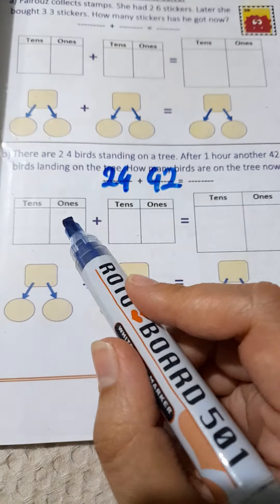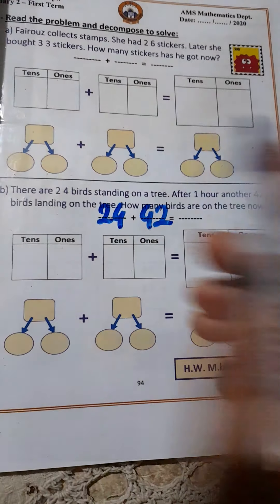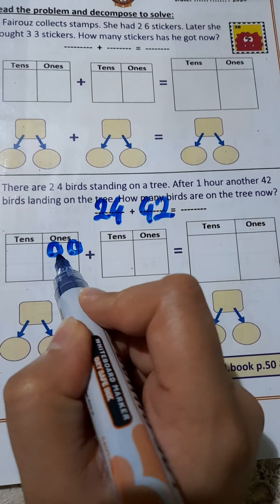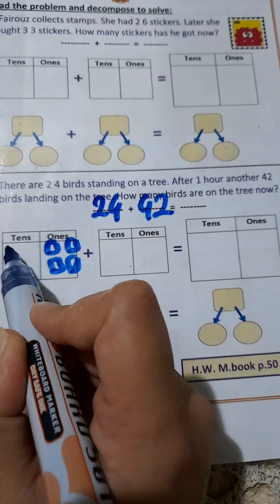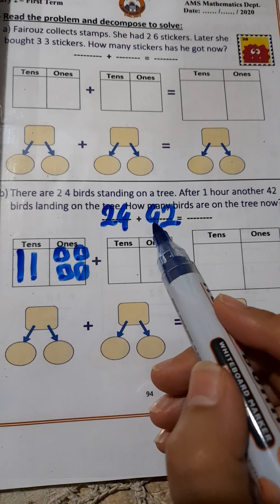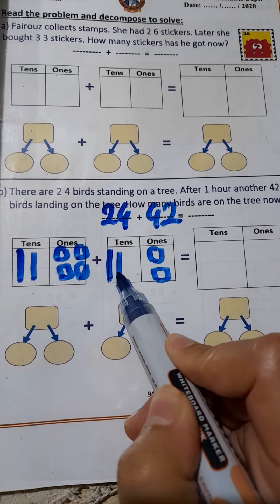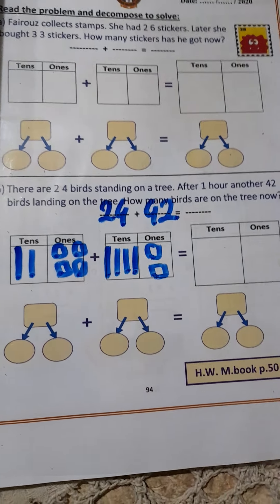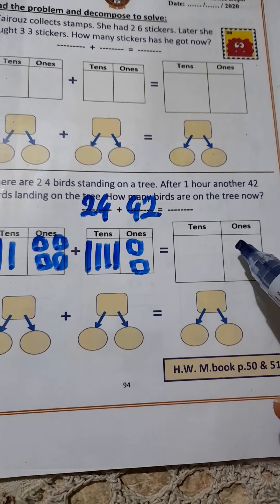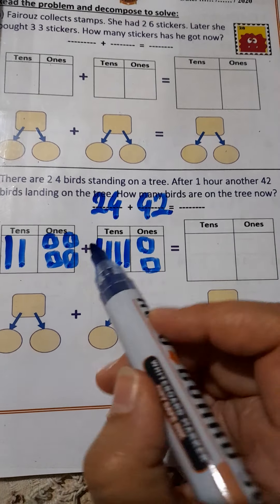Let's use the place value mat to find the result. For 24: 4 in ones and 2 in tens. For 42: 2 in ones and 4 in tens. In an addition operation, we start with ones — ones plus ones, put the result in the ones place. Then tens plus tens, put the result in the tens place.